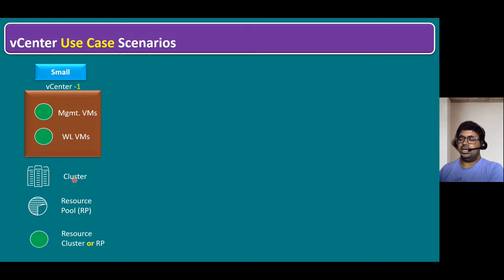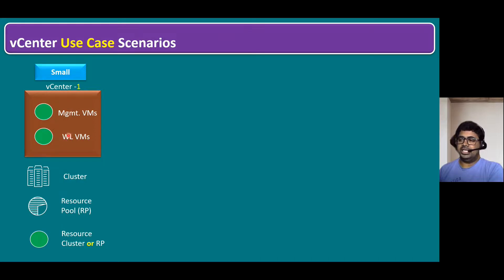We can either create multiple clusters, or within a single cluster, we can create resource pools. For example, with three ESXi hosts, we configure a datacenter and create a three-node cluster with HA and DRS. If the customer wants to segregate management VMs and workload VMs, we create two resource pools — one dedicated for management VMs and another for workload VMs.